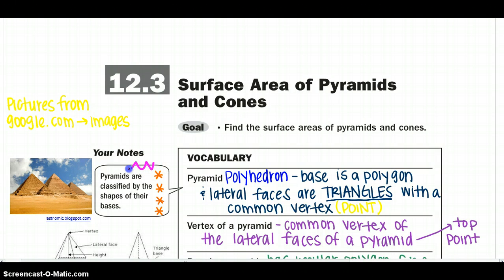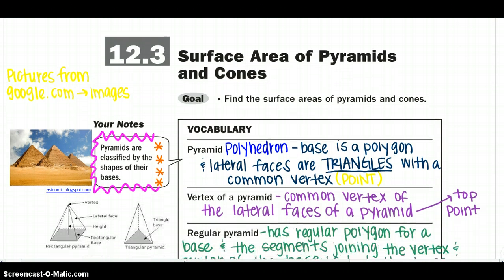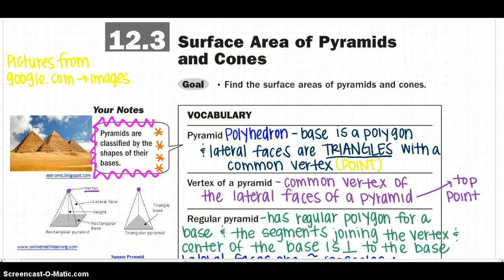And we've also talked about that pyramids are classified by the base or the shape of their base. So if it is a pentagon, it'll be a pentagonal pyramid and so forth. So the vertex of the pyramid is the common vertex of the lateral faces of the pyramid. If you look over to the left, you can tell that all their lateral faces join together at that top point that will be called my vertex.